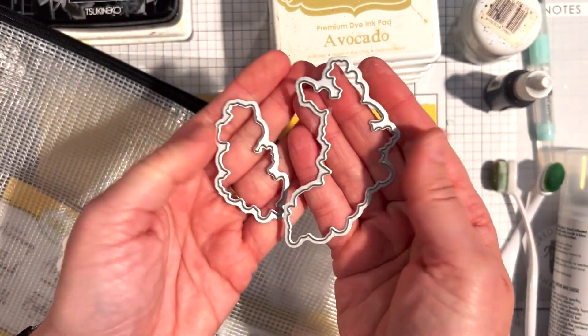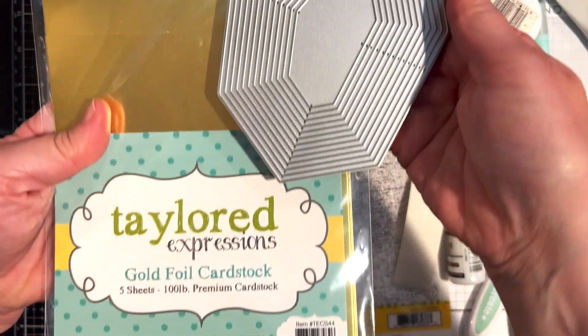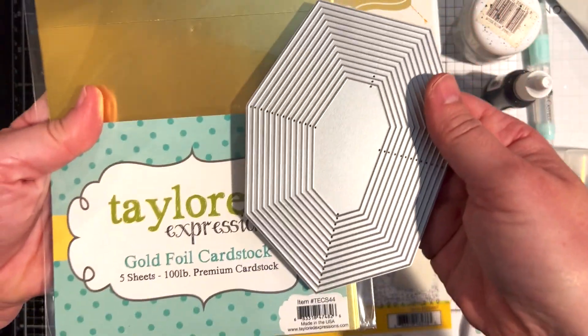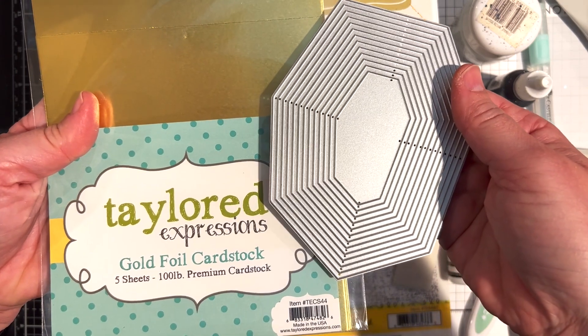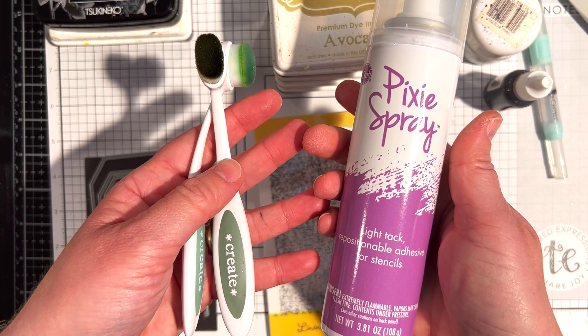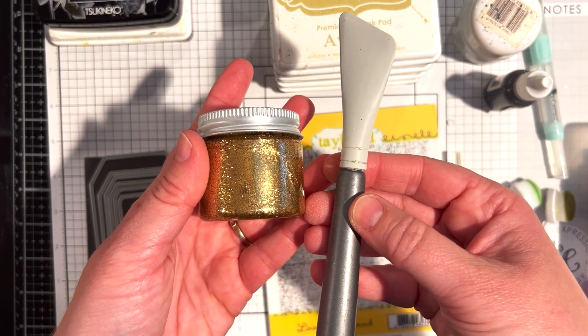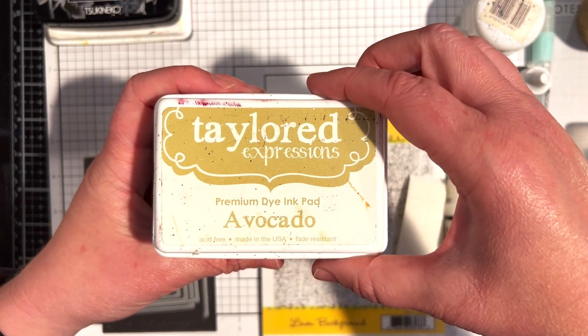For other supplies not included in the kit, I'm using the gemstone thin frame cutting plate along with gold foil cardstock. I'm using my bitty blender brushes and pixie spray. I'm adding sparkle with happy medium gold glitter and I've got my nouveau media spatula.